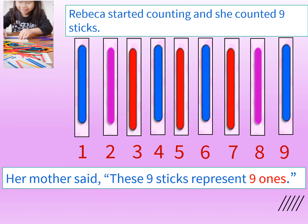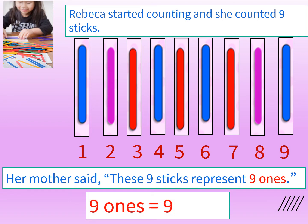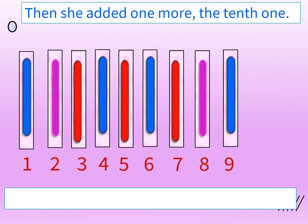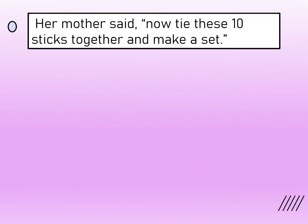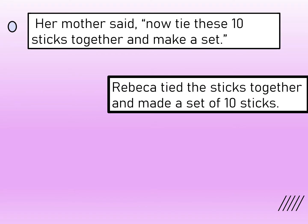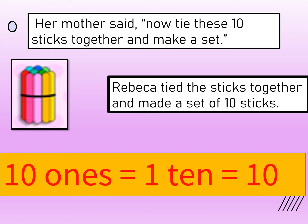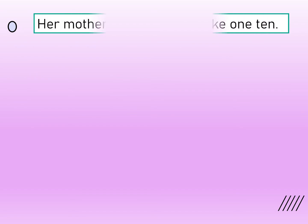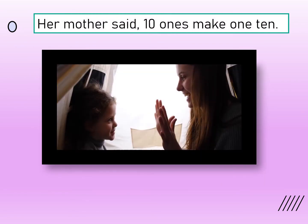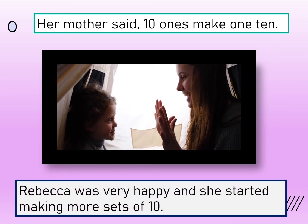Her mother said these 9 sticks represent 9 ones. 9 ones make the number 9. Then she added one more — the 10th one. Her mother said now there are 10 sticks. She said, tie these 10 sticks together and make a set. 10 ones is equal to one ten. Her mother said 10 ones make one ten. Rebecca was very happy and she started making more sets of 10.